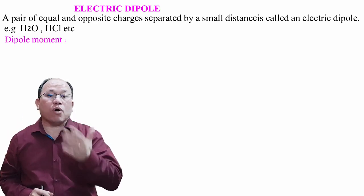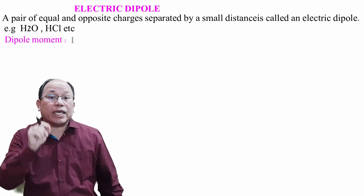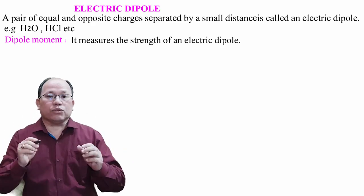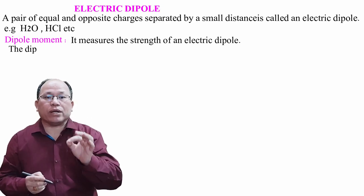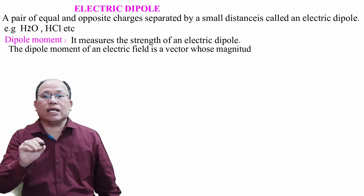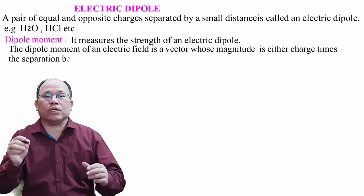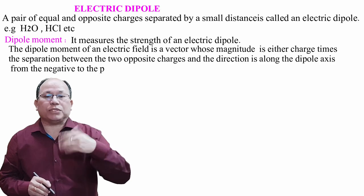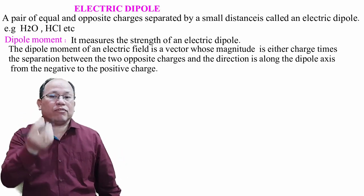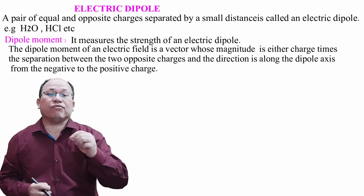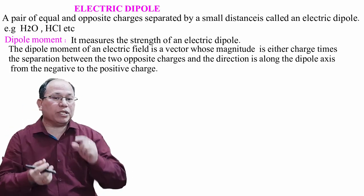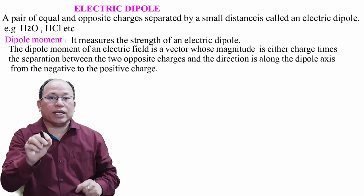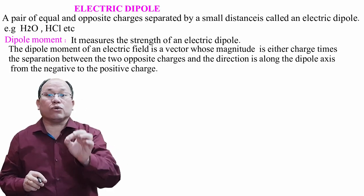Next is the dipole moment or electric dipole moment. It measures the strength of an electric dipole. The dipole moment is a vector whose magnitude is either charge times the separation between the two opposite charges, and the direction is along the dipole axis from the negative to the positive charge. Electric dipole moment is defined as the product of the magnitude of either charge, q, and the separation, 2a. So p = q × 2a.